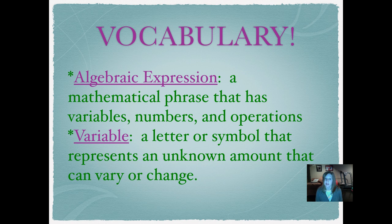A variable is a letter or symbol that represents an unknown amount that can vary or change. We know what a number is — that's like 1, 2, 3, 4, 5, or any number. And an operation is add, subtract, multiply, or divide.